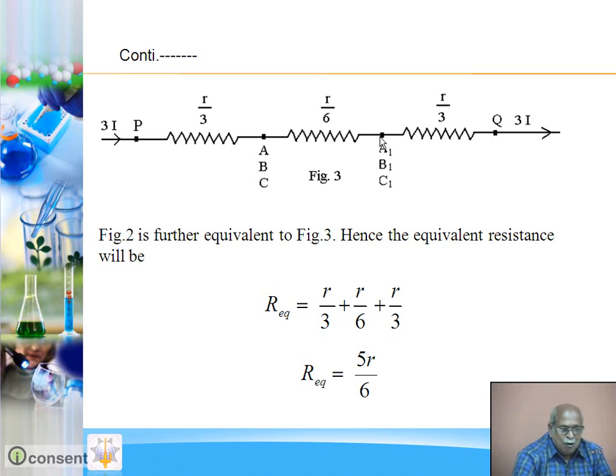Finally, from A1, B1, C1 to Q, again, 3 resistances in parallel, so equivalent R upon 3. So total situation is here. Finally, it is clear that these R upon 3, R upon 6, R upon 3 are in series. So what is the equivalent resistance between diagonally opposite corners P and Q? Equivalent resistance from P to Q will be series, so R upon 3 plus R upon 6 plus R upon 3. Answer, 5R upon 6. How good?